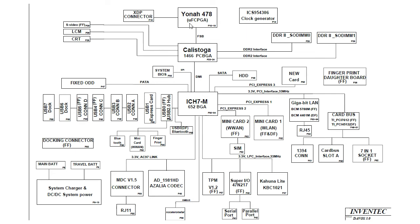Now here is a real block diagram of a real motherboard. This is the CPU or Central Processing Unit, and here is the North Bridge or GMCH. The GMCH is connected via the Front Side Bus to the processor. Here we have the ICCH, connected via DMI to the GMCH.